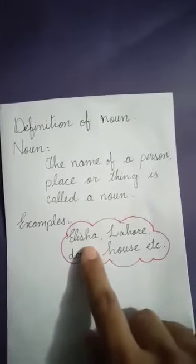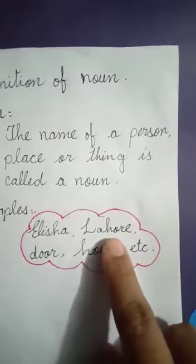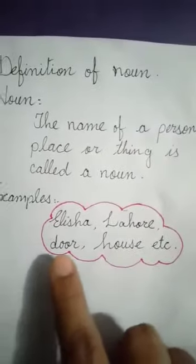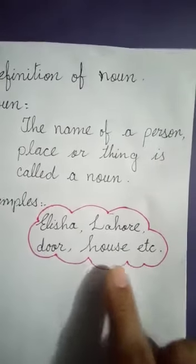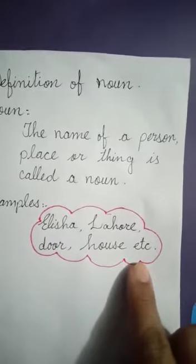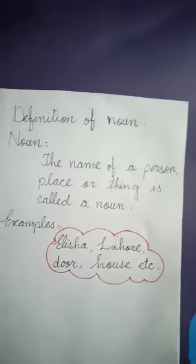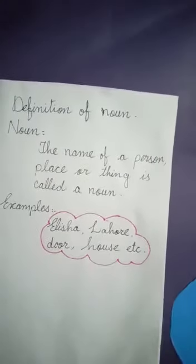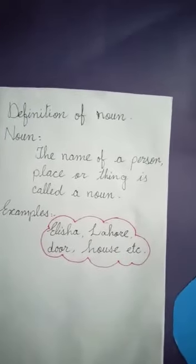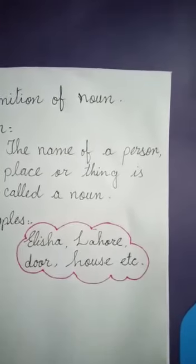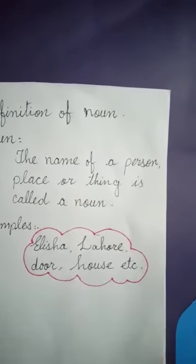Examples: Alicia, Lahore, door, house, etc. Students, now you understood the definition of noun. The name of a person, place, or thing is called a noun.